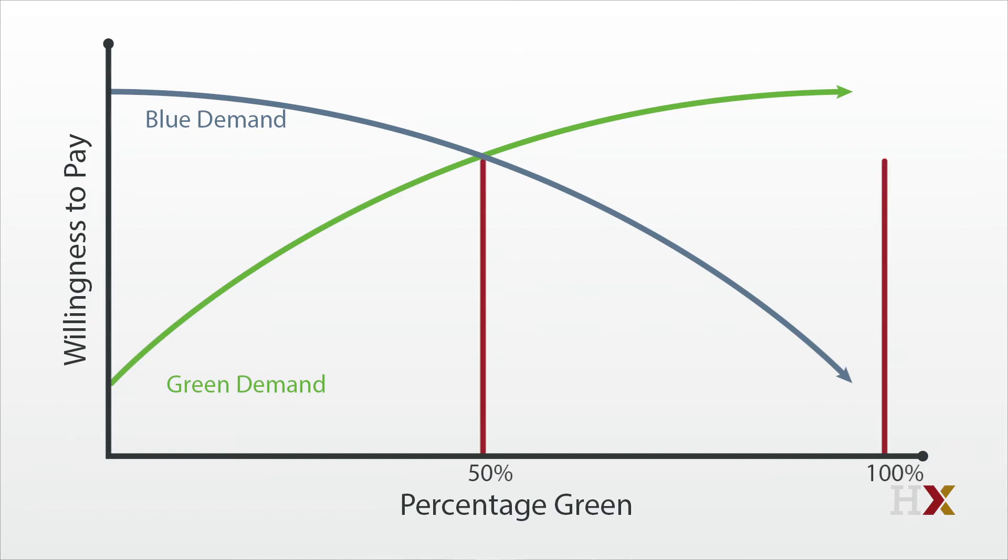That is one equilibrium, because at that point, the blues and the greens are willing to pay exactly the same amount to live in the neighborhood. But that lovely integrated equilibrium is pretty unstable.